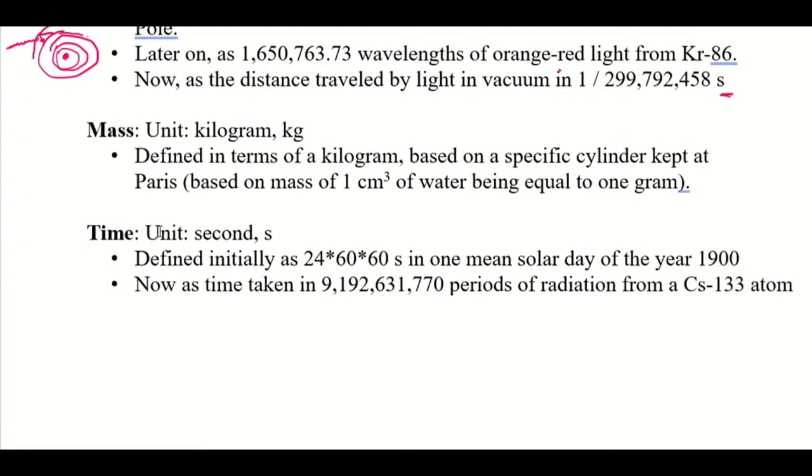Mass - the unit is a kilogram, which is based on a cylinder kept in Paris, which is the primary standard. Secondary standards, copies of that, were made and distributed around the world. It's based on the mass of a cubic centimeter of water, which is equal to one gram at 4 degrees Celsius. That much quantity of water, a cubic centimeter, at 4 degrees Celsius would be exactly one gram. Multiplying by a thousand you make a kilogram and make a cylinder and say that's the standard kilogram.